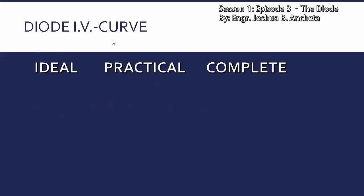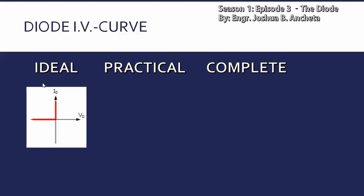Diode IV curve — so yung IV curve, ito yung current and voltage curve ng mga models ng diode. Para sa ideal, ito yung IV curve: yung y-axis natin para yan sa diode current, and then yung x-axis natin para yan sa diode voltage. So sa first quadrant, ito yung forward region, and then yung third quadrant, ito naman yung reverse bias condition or reverse bias region.